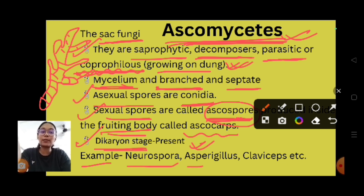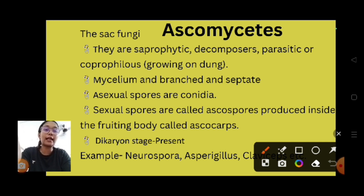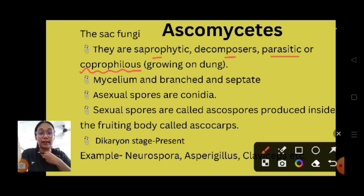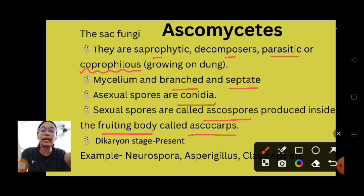Examples of Ascomycetes include Neurospora, Aspergillus, and others. The key features to remember: saprophytic, decomposers, parasitic, coprophilous; mycelium branched and septate; asexual reproduction through conidia; sexual reproduction through ascospores from fruiting body called ascocarp; dikaryophase present. Ascomycetes are also known as sac fungi.